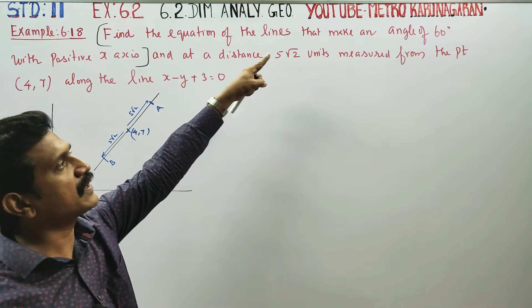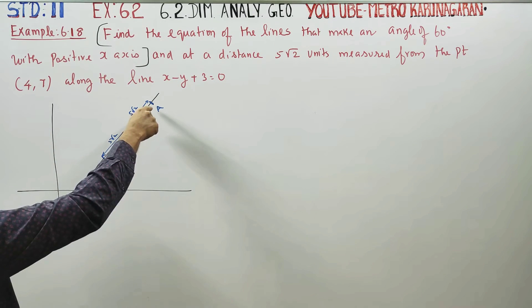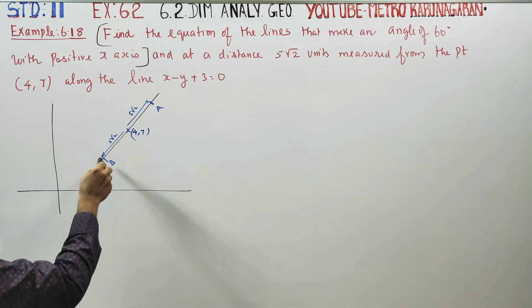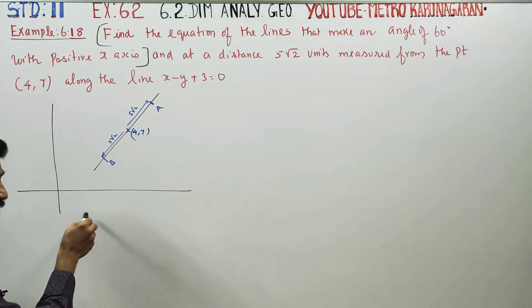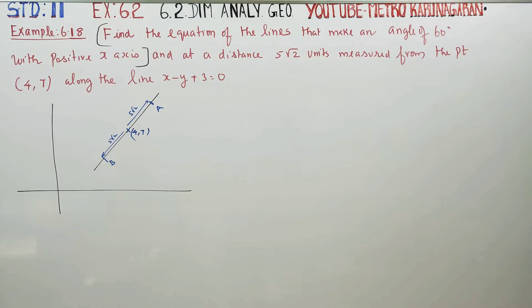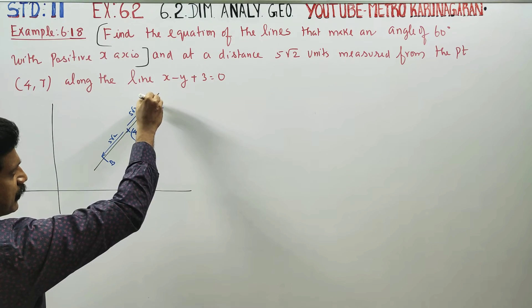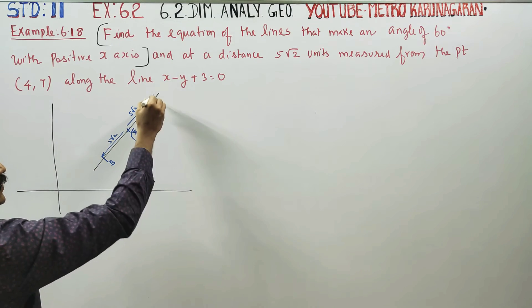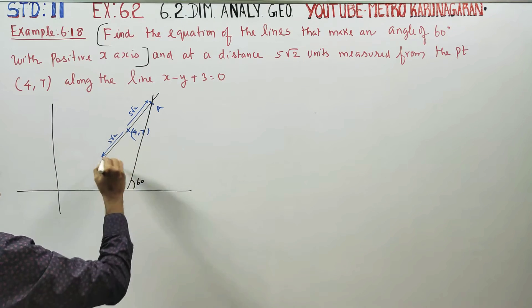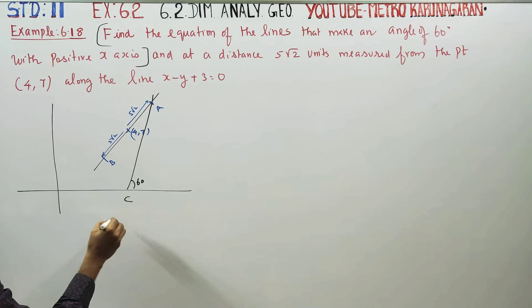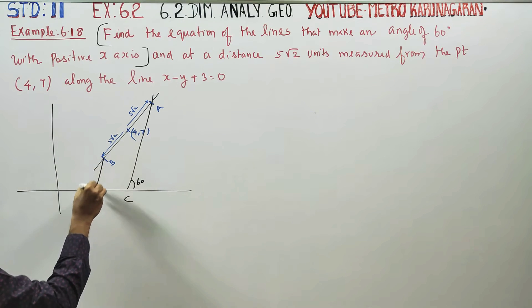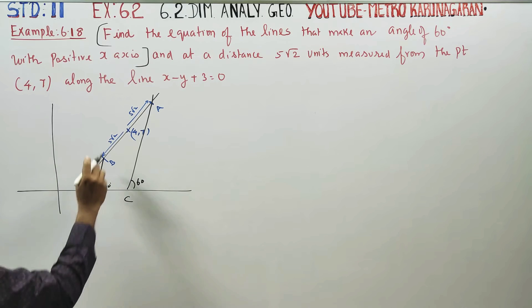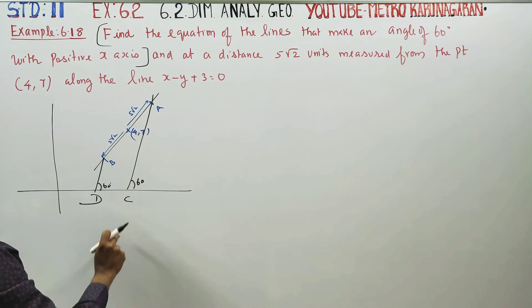Find the equation of the line that makes angle 60 degrees. Through point A, the line makes 60 degrees — find the equation of that straight line. Through point B, the line makes 60 degrees — find the equation of that straight line. So we need equations: for AC, for BD.